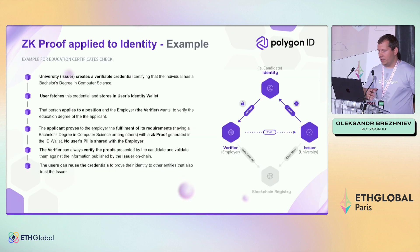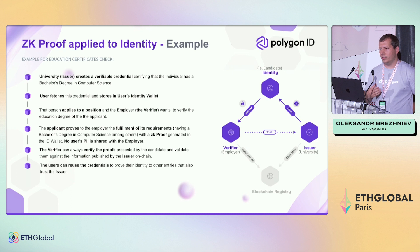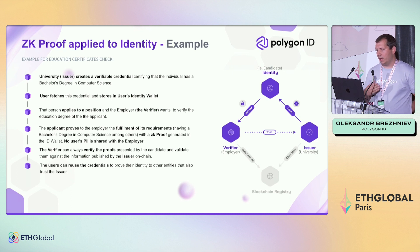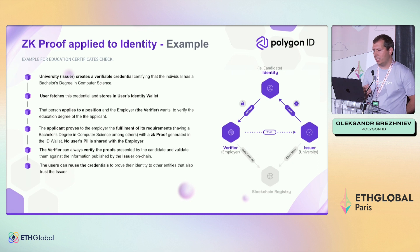In this concept of identity we have three main parties. It's the user, the identity holder. We have also the verifier — the one who receives data and consumes it. And also the issuer, it's a source of trust who is issuing credentials to the user.